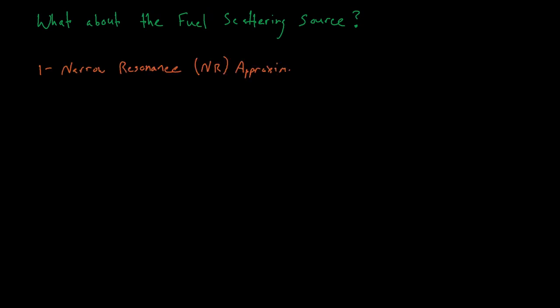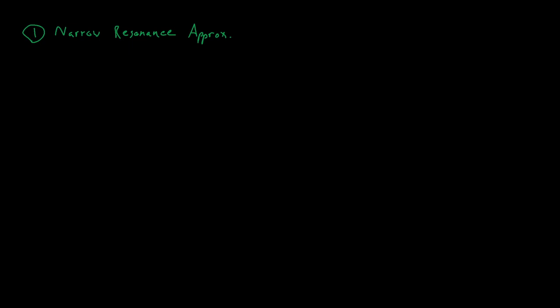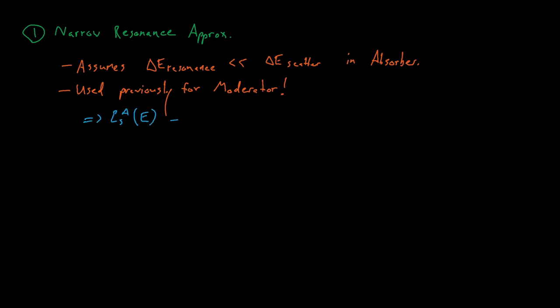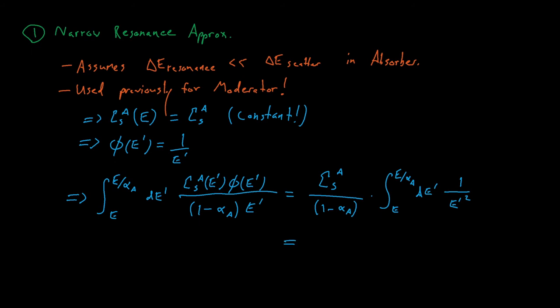The first is the narrow resonance approximation, which assumes the resonance width is narrow compared to the delta_E scatter in the fuel. The second is the narrow resonance infinite mass approximation, which essentially assumes the resonance width is large compared to the delta_E scatter in the fuel. The narrow resonance approximation is actually the same as what we used for the moderator: we assume the resonance is small compared to the average energy lost per collision in the absorber, and that the scattering cross-section in the absorber is constant. Thus, the slowing down flux in the absorber scattering source term is just the typical 1/E flux, giving us that the absorber scattering source at energy E equals the absorber scattering cross-section divided by E.